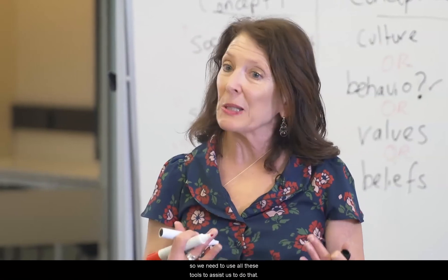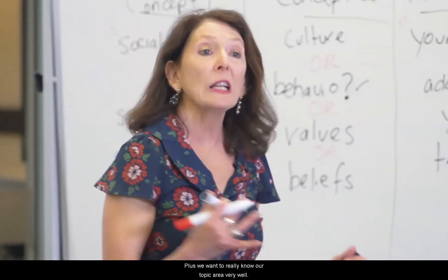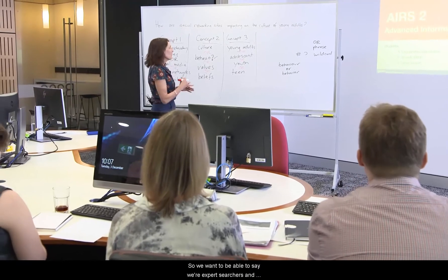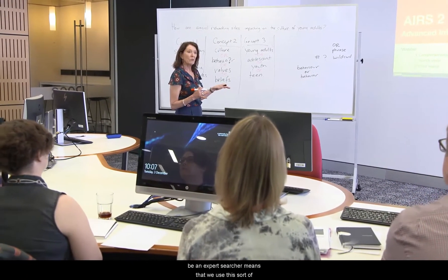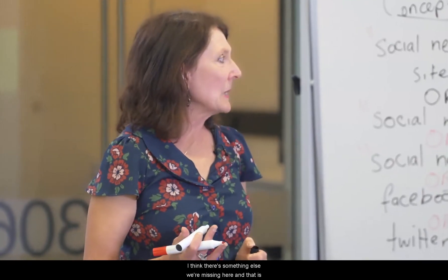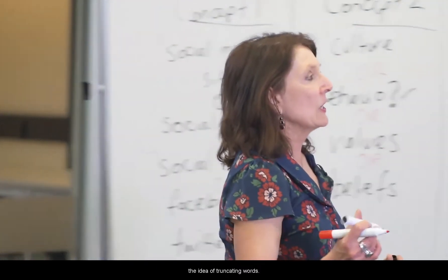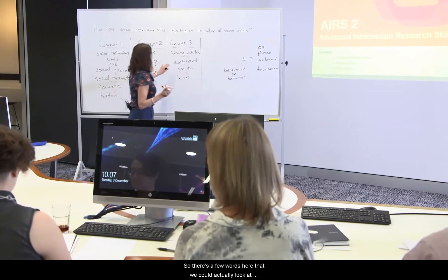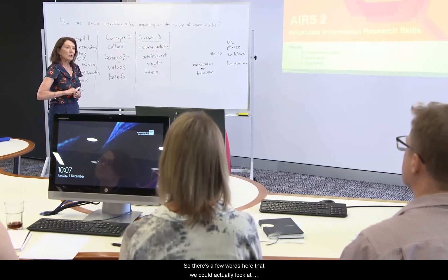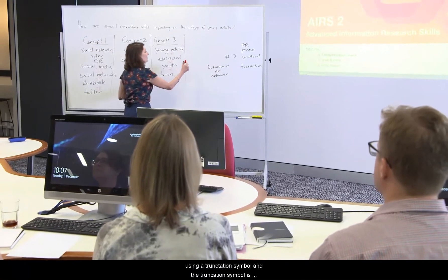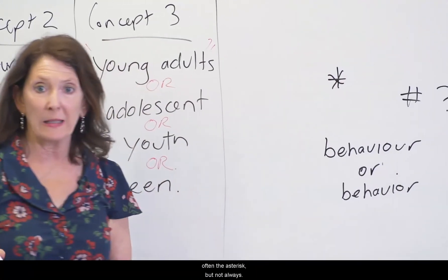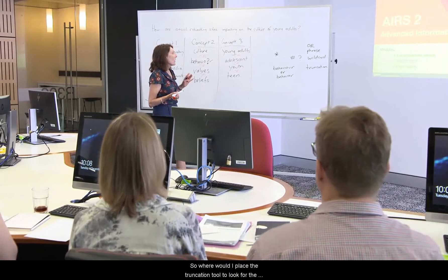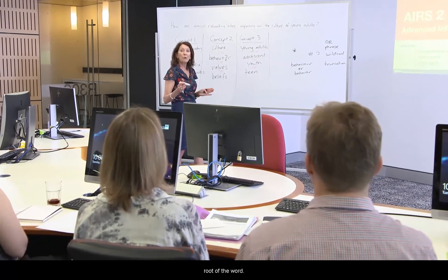We need to use all these tools to assist us. We want to really know our topic area very well, so we can say we're expert searchers. Being an expert searcher means that we use this sort of search technique. I think there's something else we're missing here, and that is the idea of truncating words. There are a few words here that we could look at using a truncation symbol. The truncation symbol is often the asterisk, but not always. Again, you'd need to look at the help screen for your individual databases. So where would I place the truncation tool to look for the root of the word?